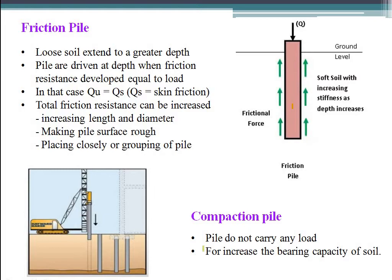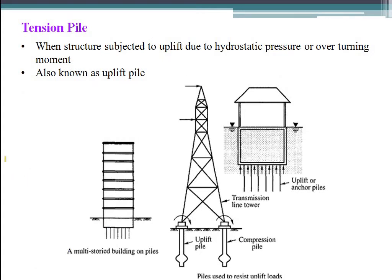Compaction Pile: these piles do not carry any load; they are used only to increase the bearing capacity of the soil. You insert the pile by driving it down by mechanical force, and at intervals you provide these compaction piles to densify the surrounding soil. Tension Pile: when the structure is subjected to uplift due to hydrostatic pressure or overturning moment, also known as uplift piles. In the figure, a multi-story building on very soft ground requires piles.